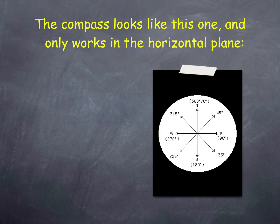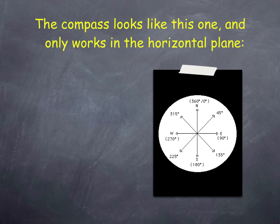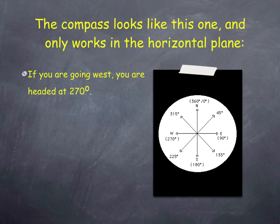Starting with our four compass points: in the bearing angle system, you're pretending you're right at the center of that circle. If I'm pointing at 17 degrees, that means I'm going mostly north and a little bit east. If I'm pointing at 188, I'm going mostly south and a little bit west. If I'm pointing at 250, I'm going mostly west and a little bit south. If I'm going west I'd be at 270; if I'm going east, straight at 90.